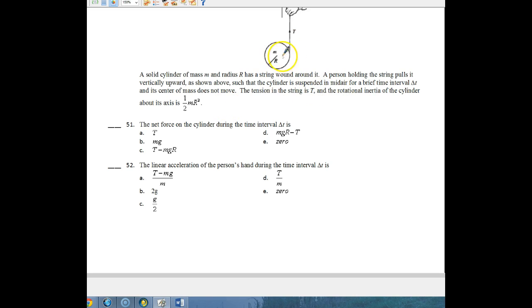The net force on the cylinder during this time interval delta T is, let's think about the net force here. Our net force, or the sum of the forces, is equal to T minus Mg. So we have Mg of the disk going down, we have T going up. And that should be equal to Ma.